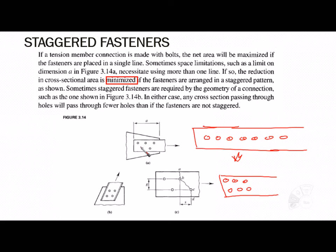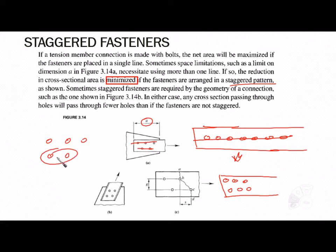Sometimes space limitations on dimension 'a' necessitate using more than one line of fasteners. The reduction in cross-sectional area is minimized if the fasteners are arranged in a staggered pattern, because instead of having them all on the same line, we shift one a little bit to produce this offset pattern.